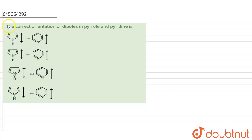Hello everyone. So in this question, the correct orientation of dipoles in pyrrole and pyridine is to be determined. We have to find the correct orientation of dipole, and to do this we'll first have to consider the resonance in pyrrole and pyridine. I will draw the resonance structures of pyrrole and see in which direction the negative charge is moving.